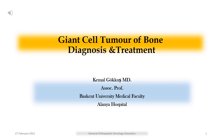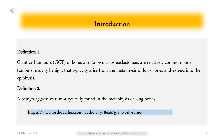Giant Cell Tumor of Bone: Diagnosis and Treatment. Giant cell tumors of bone, also known as osteoclastomas, are relatively common bone tumors, usually benign, that typically arise from the metaphysis of long bones and extend into the epiphysis.